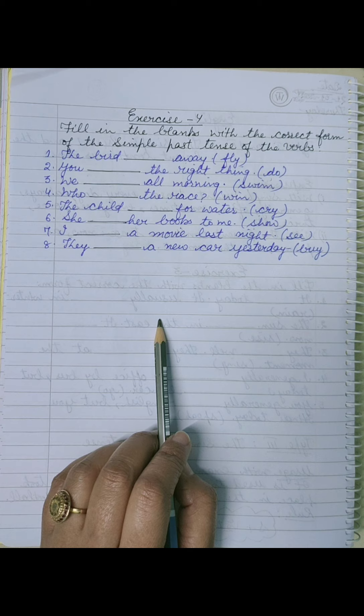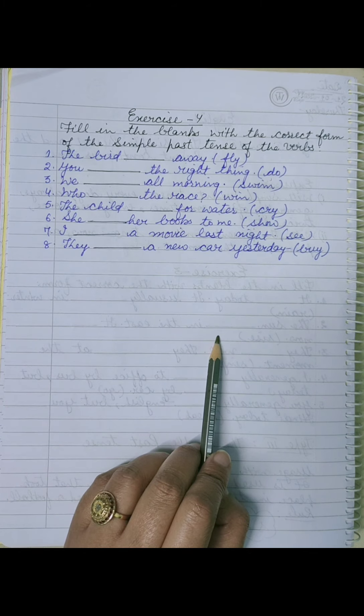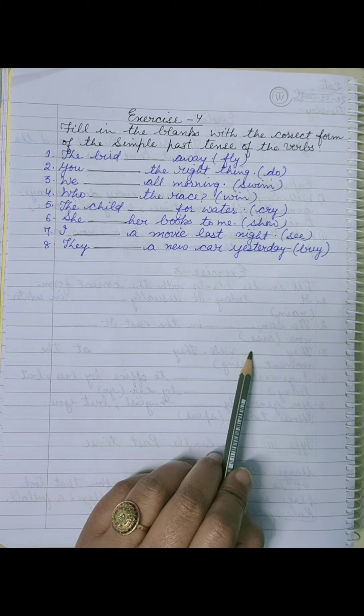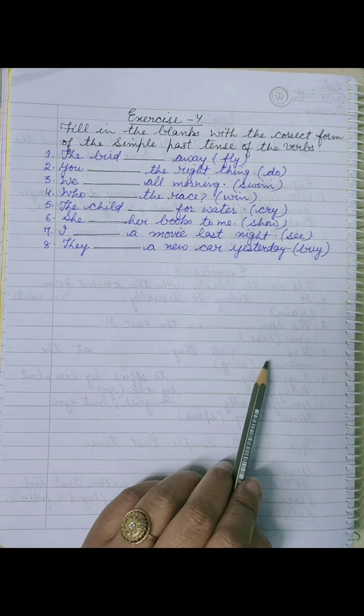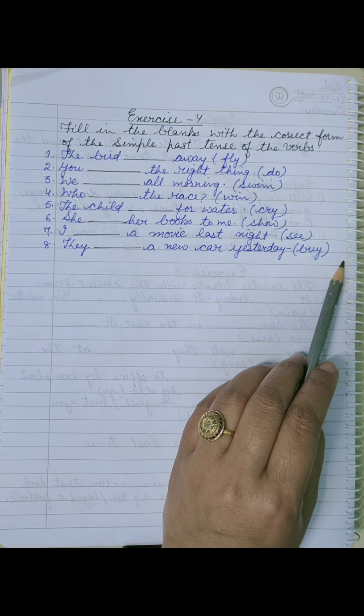First होती है present जिसमें do है present, then did आएगा past में, past form of verb. Third आएगा past participle जिसमें done, third form आएगी. And fourth में आएगी present participle, means present के साथ आएगी, means do के साथ आएगी doing.